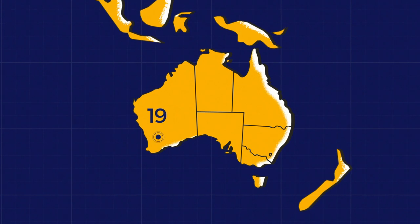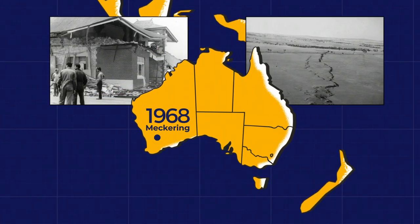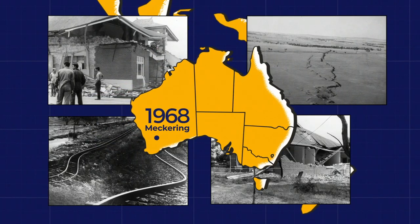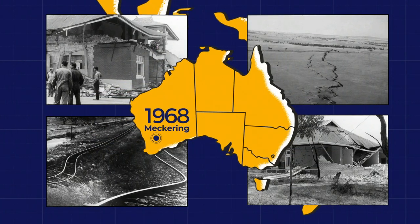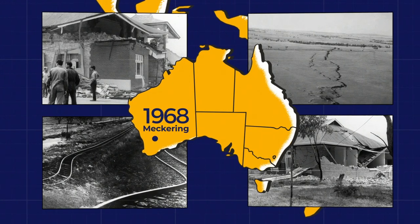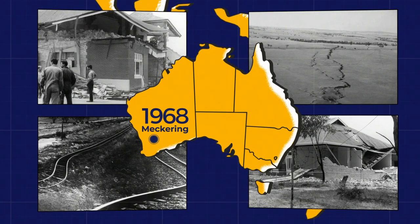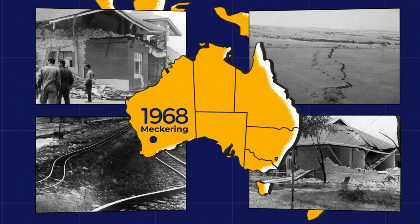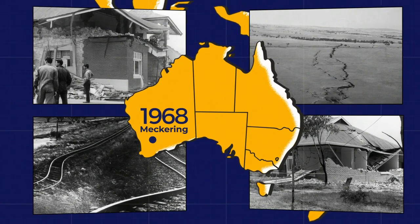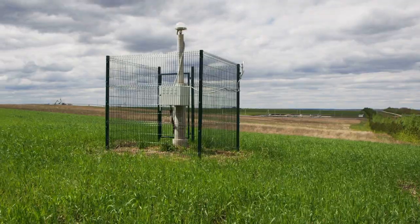This is what caused the 1968 Meckering earthquake in Western Australia, which had a magnitude of 6.5 and caused major damage to structures and infrastructure, including roads and railway lines, and injured about 30 people.